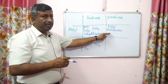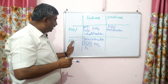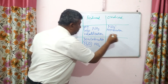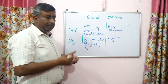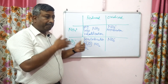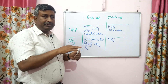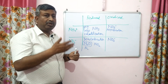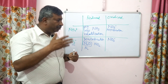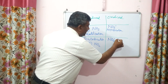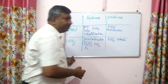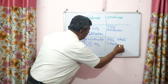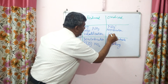Under oxidized condition, nitrification takes place and nitrates are formed. This nitrate under oxidized condition remains as nitrate. But the problem is that if the nitrate amount is more than what the plant needs, then this excess nitrate remains in soil and moves downward with the percolating water. This process is known as leaching.